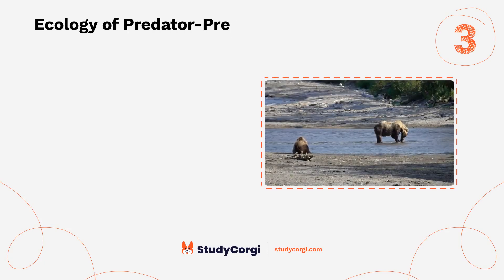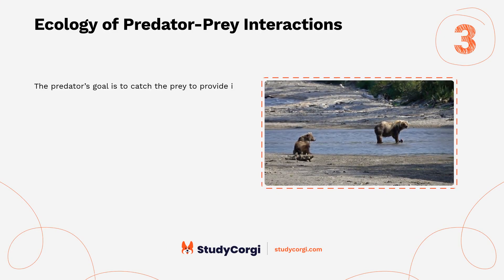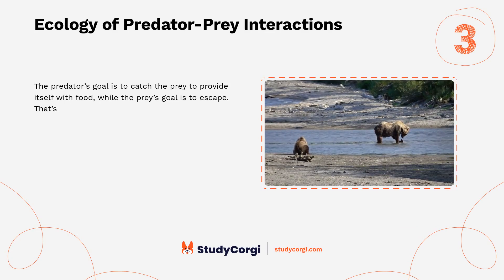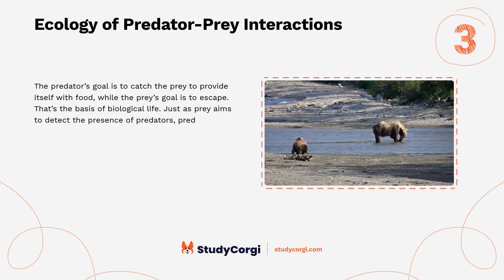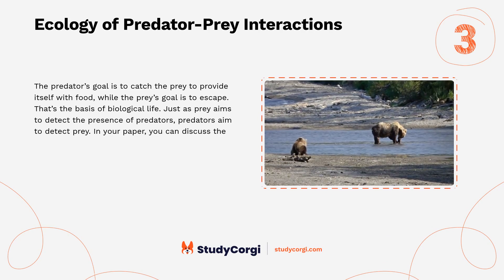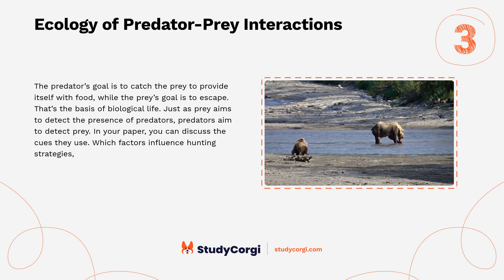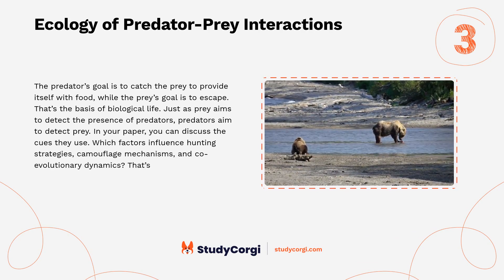Ecology of Predator-Prey Interactions. The predator's goal is to catch the prey to provide itself with food, while the prey's goal is to escape — that's the basis of biological life. Just as prey aims to detect the presence of predators, predators aim to detect prey. In your paper, you can discuss the cues they use. Which factors influence hunting strategies, camouflage mechanisms, and co-evolutionary dynamics? That's an exciting question.